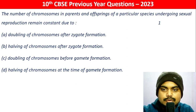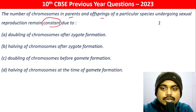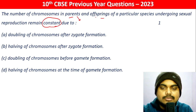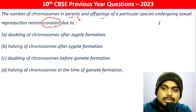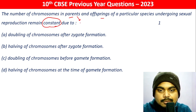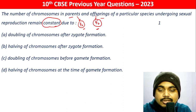The minimum — the number of chromosomes in parents and offspring of a particular species undergoing sexual reproduction remain constant due to... actually, parents ke paas and offspring ke paas — the gametes which are coming, they are coming half-half. So half from one side and half from the other, and when they combine, you get the full.